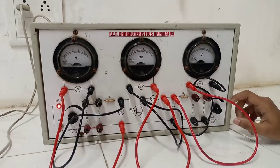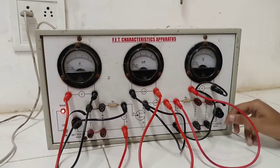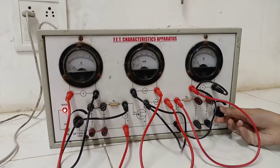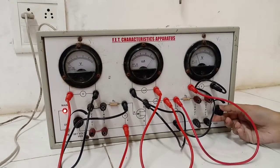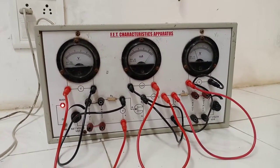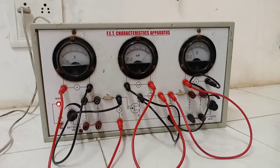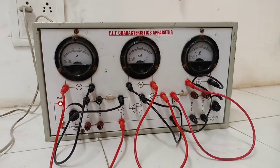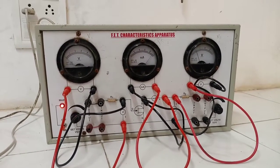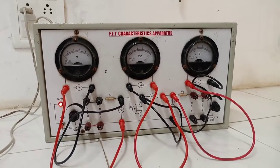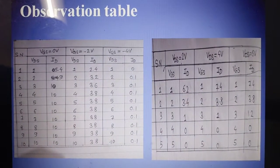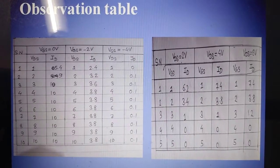The next part is the transfer characteristic. For the transfer characteristic, keep the voltage VDS at 2 volt constant and by changing gate-to-source voltage VGS in steps of minus 0.5 volt from 0 until drain current ID becomes 0. Repeat the similar step for constant values of VDS equal to 4 volt and 6 volt, and plot the transfer characteristic. This is the observation table of the drain characteristic and transfer characteristic.